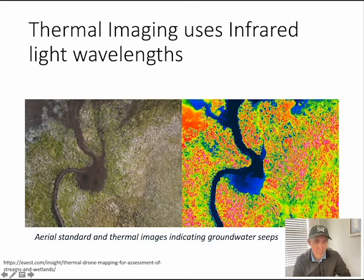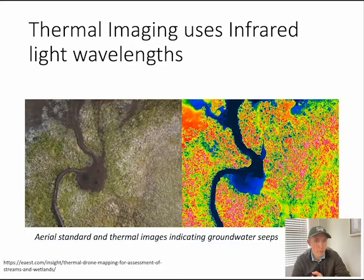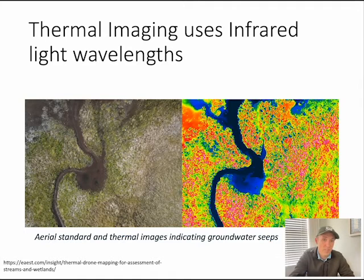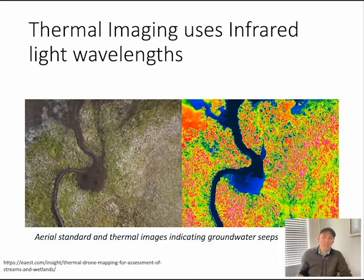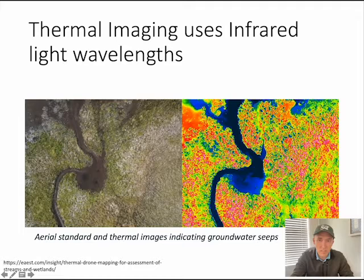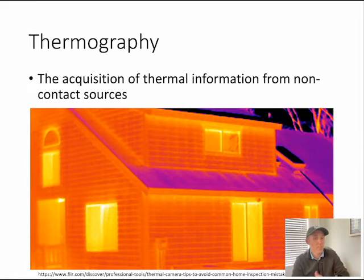Here's a comparison of thermal and optical imaging. Thermal mapping allows us to see different things than what we'd normally see with optical. By using thermal imagery, we can pull out certain details that aren't clear in optical imagery alone. Here's an example of a mapping application looking at a creek. You can see groundwater seeps in small dark blue areas — water seeping up through the ground surface. You can't see those at all in the regular optical image, but they really pop out in the thermal image.